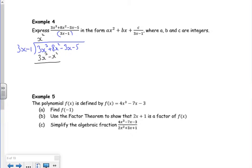Top take bottom: 3x cubed take 3x cubed. Then 8x squared minus a minus x squared is 9x squared. Bring down the 3x. What do I times 3x by to make it into 9x squared? Well, that's plus 3x. 3x times by the 3x minus 1, the divisor, is 9x squared minus 3x.